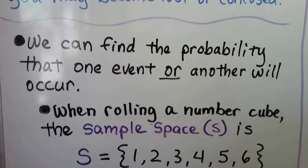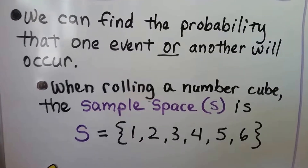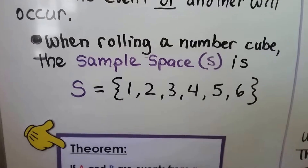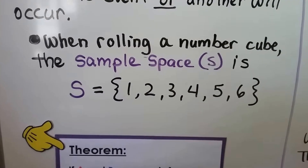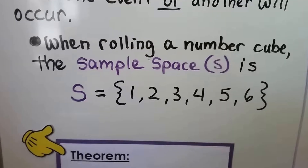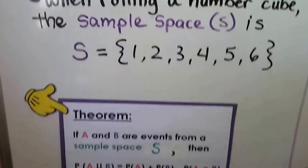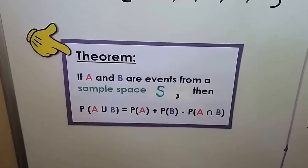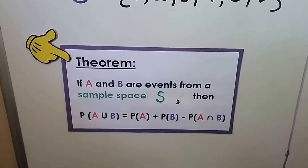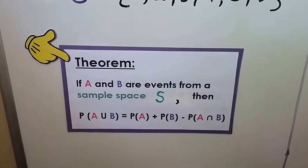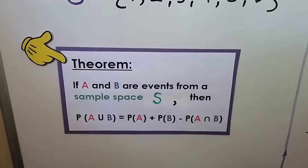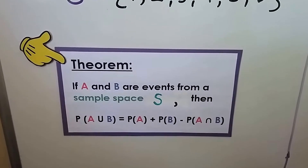We can find the probability that one event or another will occur. When rolling a number cube, the sample space S is 1, 2, 3, 4, 5, 6 — there are six sides to a die. I have a theorem: if A and B are events from a sample space S, then the probability of A union B equals the probability of A plus the probability of B minus the probability of A intersect B.